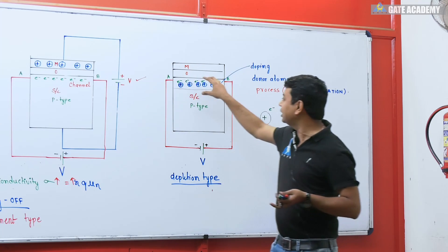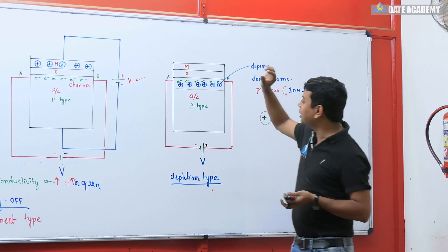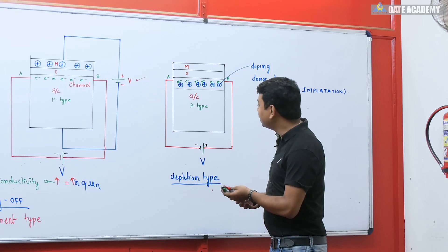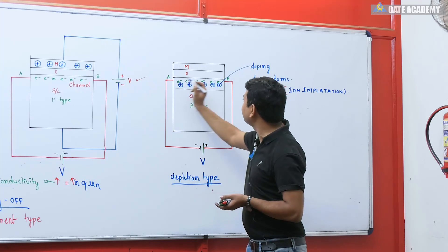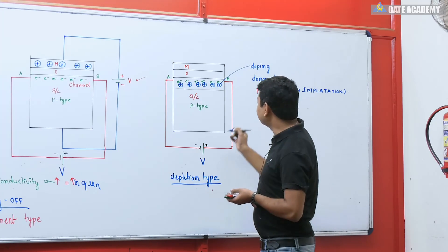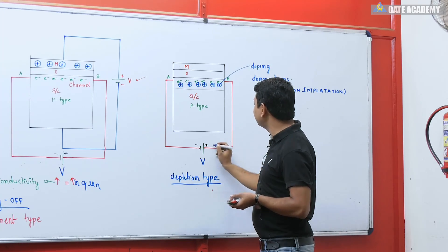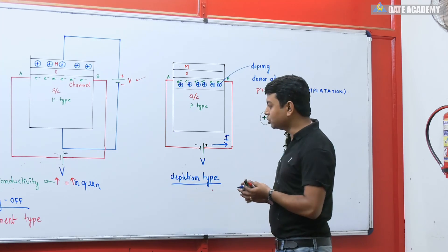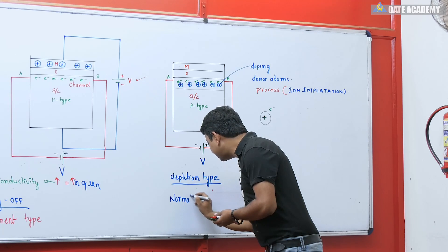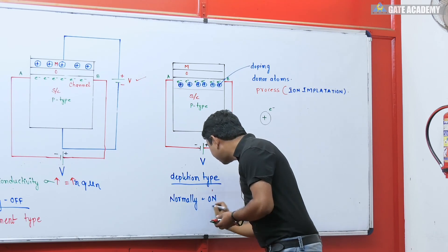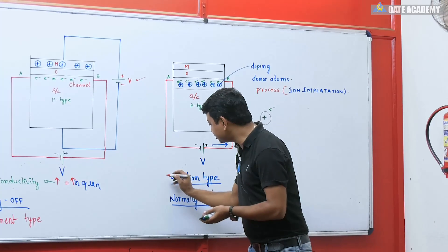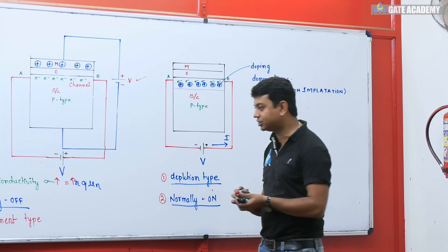Without any external voltage, this channel's conductivity is increased. If this channel's conductivity is increased, and you apply a voltage externally between point A and point B, then current starts flowing. This is the normally on condition. This type of MOSFET is known as depletion type MOSFET.